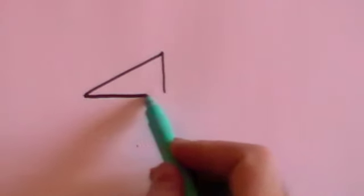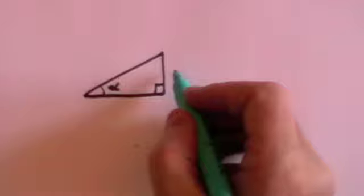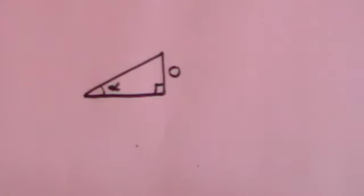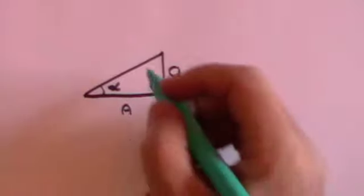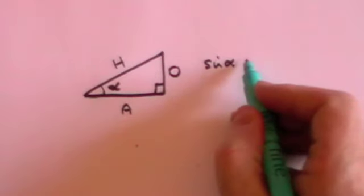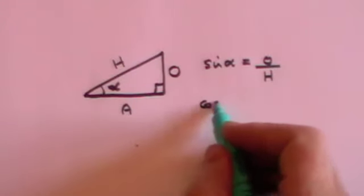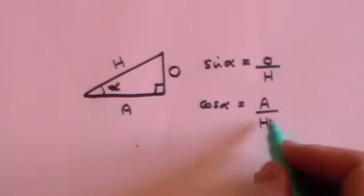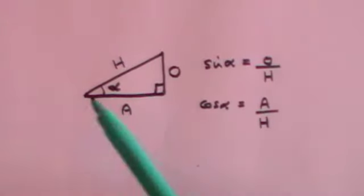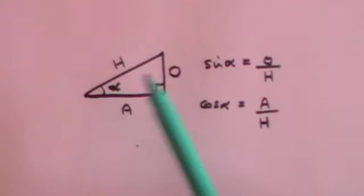If I can just remind you of what you've probably learned in maths: if you take a right angle triangle and we call this angle alpha, then this side is called the opposite because it's opposite to alpha, this is called the adjacent because it's adjacent to alpha, and this is called the hypotenuse. The sine of the angle alpha is the opposite over the hypotenuse, and the cosine of the angle alpha is the adjacent over the hypotenuse. For any given angle in a right angle triangle, the relationship of the opposite to the hypotenuse is a fixed amount.